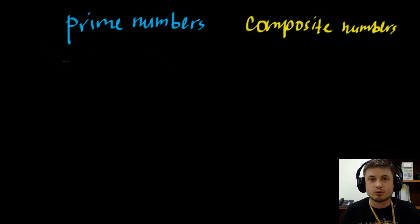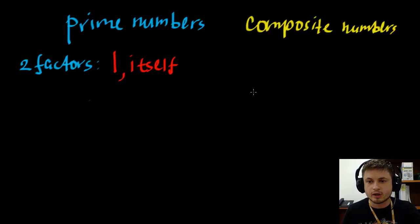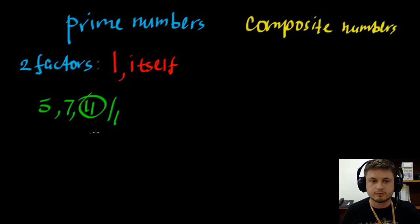Prime numbers are basically the numbers that can only be divided by number one or themselves. In other words, they only have two factors: one and itself. So these are numbers like, for example, five, seven, eleven. So let's look at eleven. Eleven can only be divided by one and by eleven, nothing else. And that's a prime number.